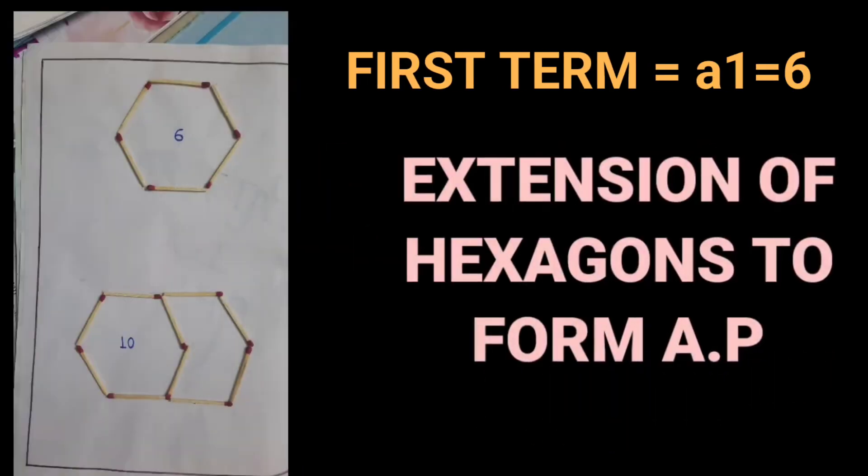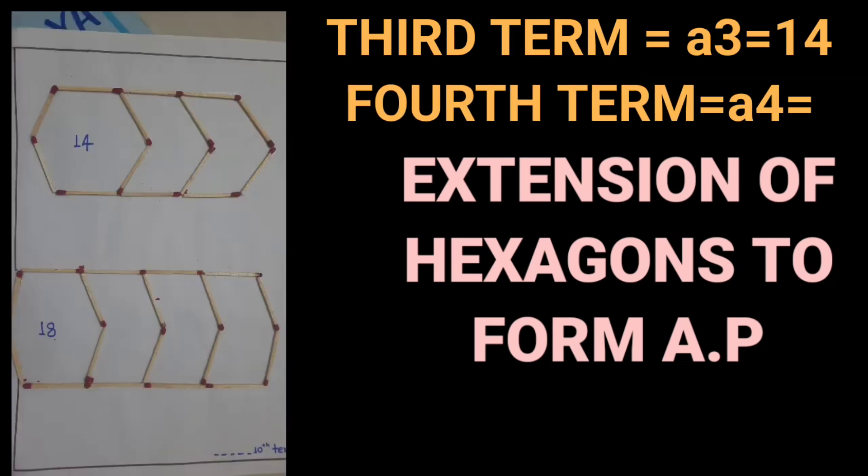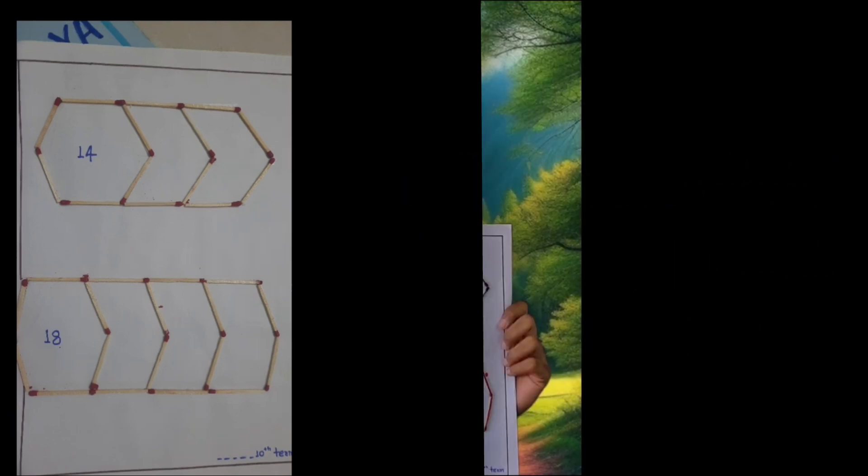In the second example, you can see six matchsticks constitute a hexagon. Again, we have increased by four. Then the third figure has 14 matchsticks, and the fourth figure has 18 matchsticks. If you find the difference between these successive terms, you get four.